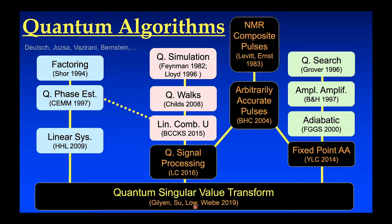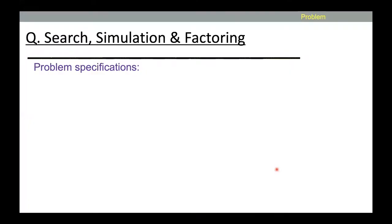Even more surprising was a generalization that Guanghao Low and collaborators András Gilyén, Yuan Su, and Nathan Wiebe continued to work on. This result from last year is known as the quantum singular value transform. Not only does it encompass quantum simulation and quantum search ideas, but also the quantum factoring ideas. And this is the story I want to tell you about today. Today's talk is really a pedagogical talk — a review, not of my work in particular, but rather a celebration of this paper by Gilyén, Su, Low, and Wiebe.